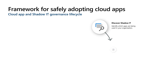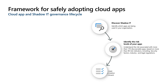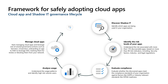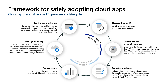Rapid cloud adoption is a fact, but we believe that any organization should be adopting the cloud in a safe and monitored way while minimizing risk for exposure. Our approach for safe adoption is based on three main app lifecycle phases: discover and identify cloud usage, evaluate and analyze associated risks, and manage and monitor access and usage. Let's dive into each phase and discuss how MCAS enables you to safely adopt cloud apps.